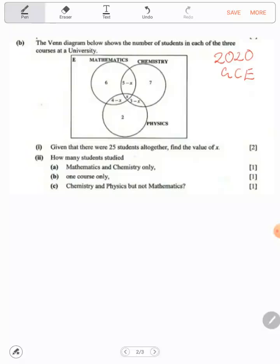Given that there were 25 students altogether in all these courses, adding up to 25, find the value of x.